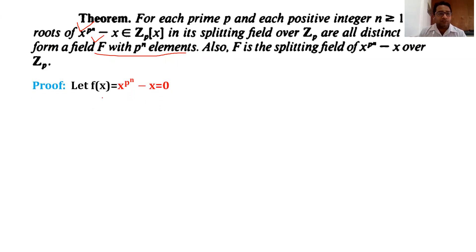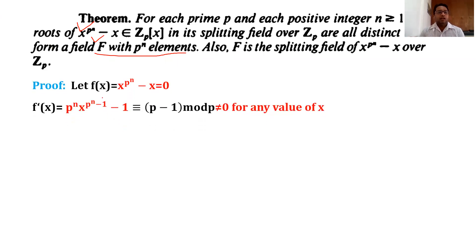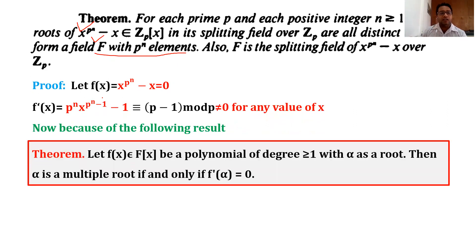Let us suppose f(x) is the polynomial. Now let us prove that all the roots are distinct. The result on multiple roots states that for f(x) belonging to F[x], a polynomial of degree greater than or equal to 1 with alpha as a root, alpha is a multiple root if and only if f'(alpha) equals zero.